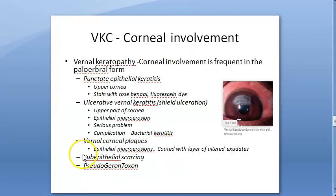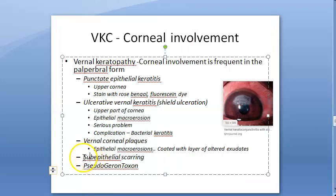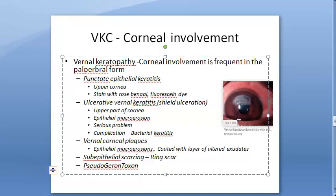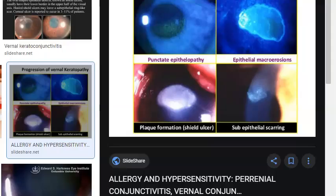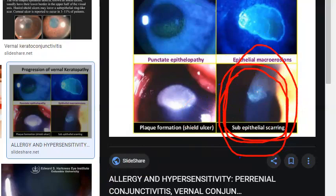The fourth lesion is subepithelial scarring, which occurs in the form of a ring scar. Subepithelial scarring — ring scar.